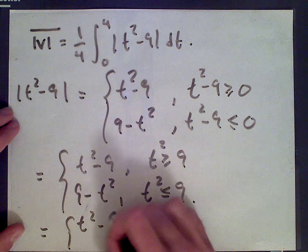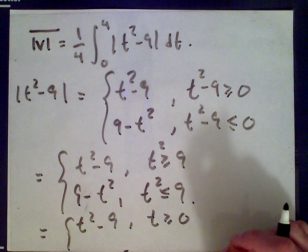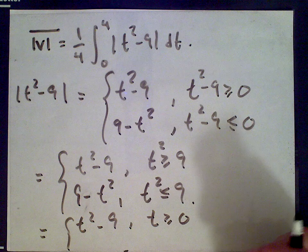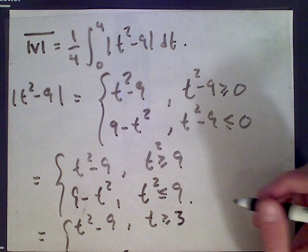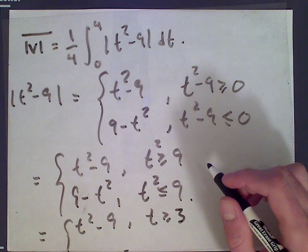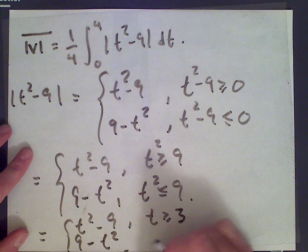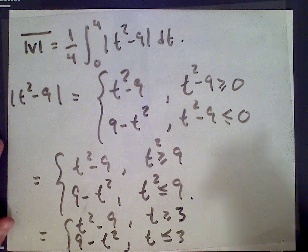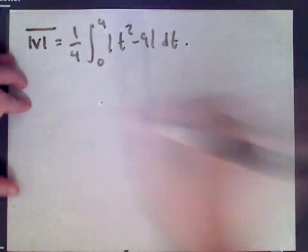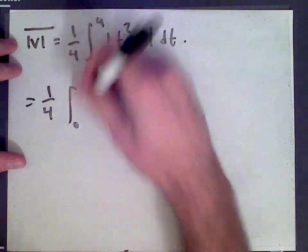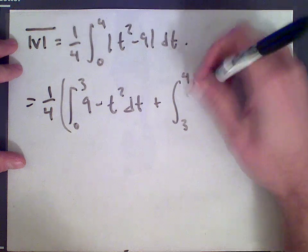On the interval [0, 4], t² is bigger than 9 when t is bigger than or equal to 3 — in general t² > 9 if t > 3 or t < -3, but we're restricting to [0, 4], so we just need t ≥ 3. And t² is less than 9 for t between 0 and 3. So it's 9 - t² for t ≤ 3. Therefore we split: the integral from 0 to 3 uses 9 - t², and from 3 to 4 uses t² - 9.